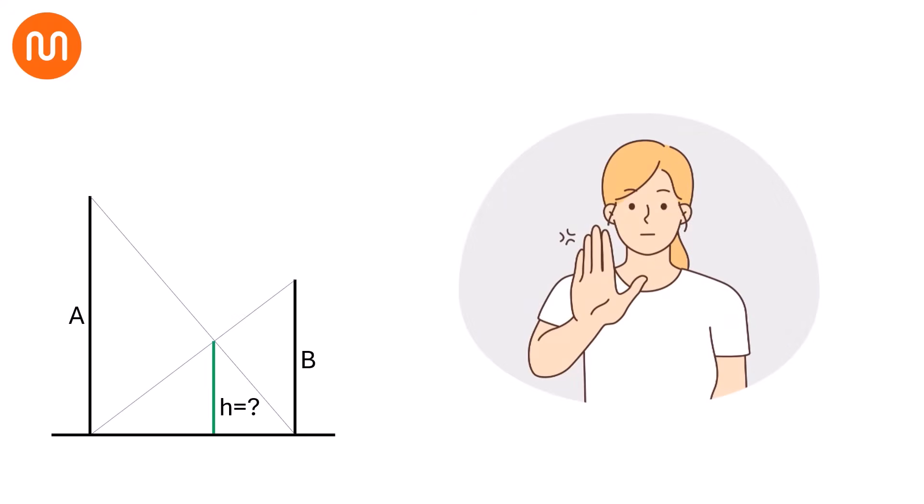Amazing! But wait! Can you find the intersection height if the poles are of heights A and B instead of 5 and 3? Drop your answer in the comments below.